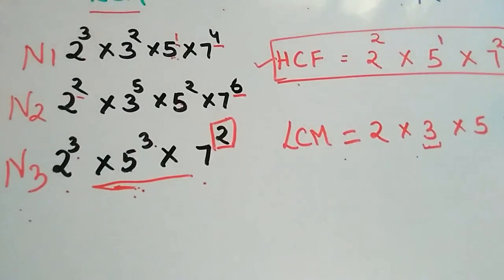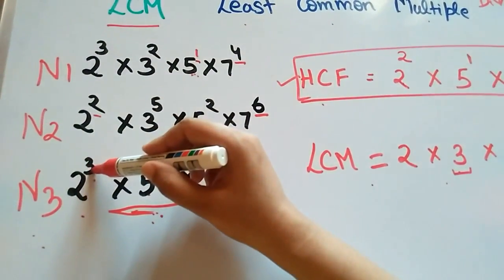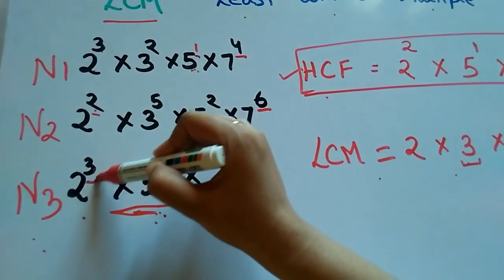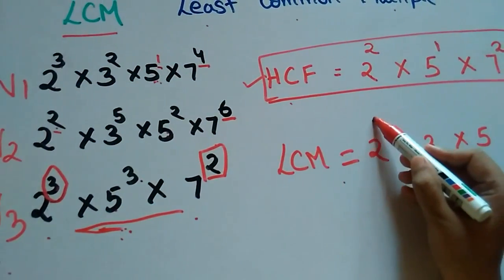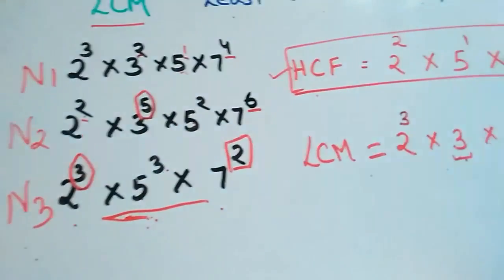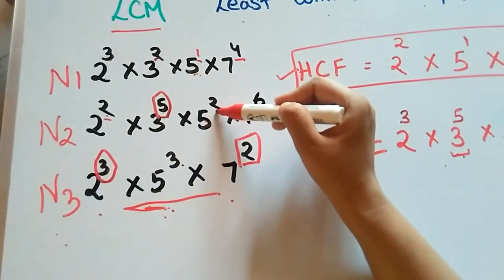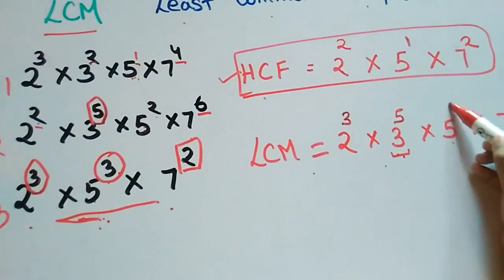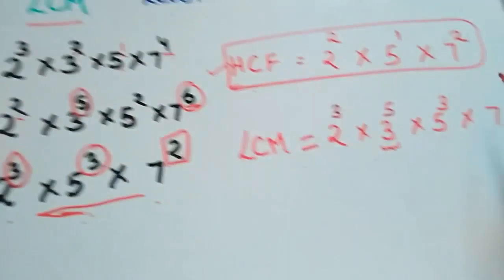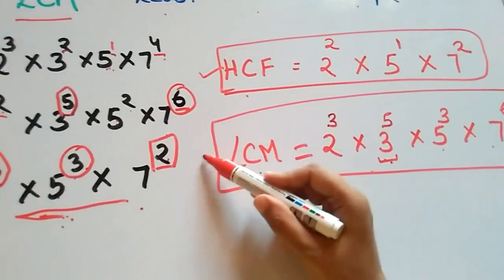Now let's see what will be the power of 2, 3, 5, and 7. In LCM we will see the greatest power. So 2 has powers 3, 2, and 3. Greatest is 3, so power is 3. For 3, greatest power is 5. For 5: 1, 2, and 3. Greatest power is 3. For 7: 4, 6, and 2. Greatest power is 6. So we got the LCM of all these three numbers.